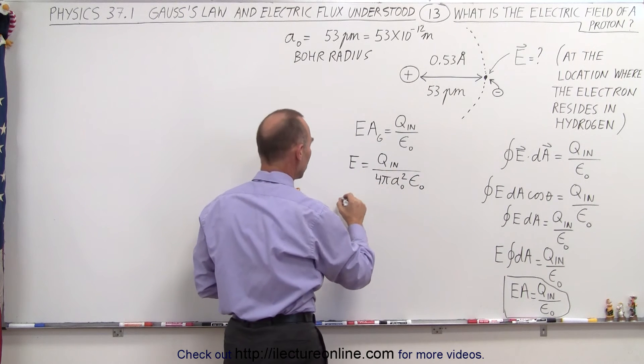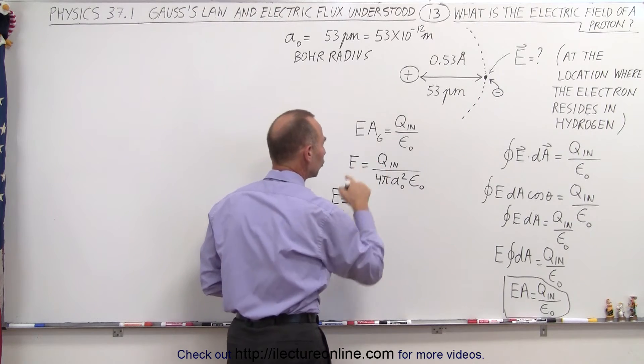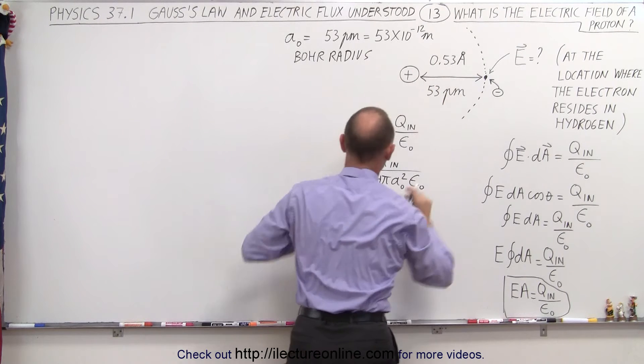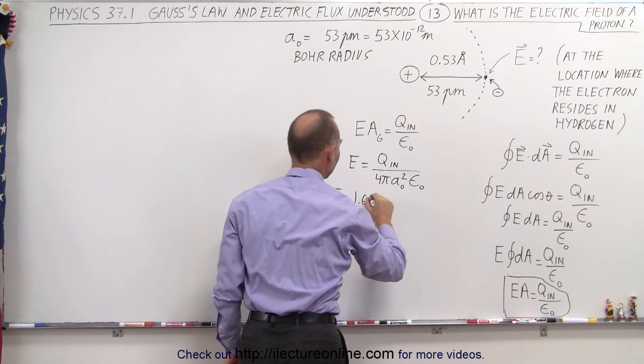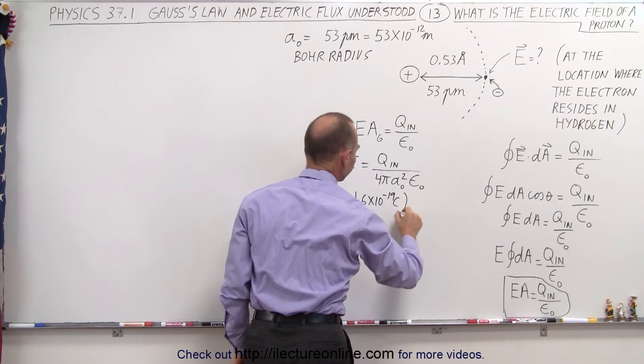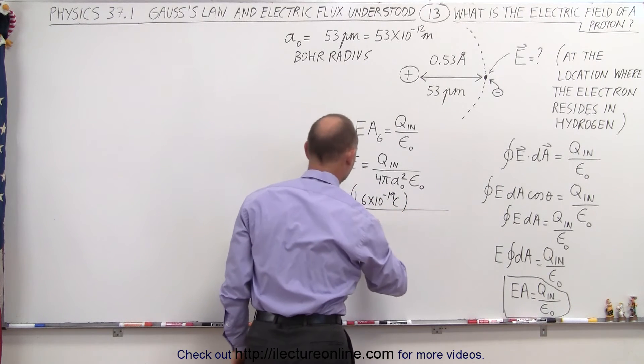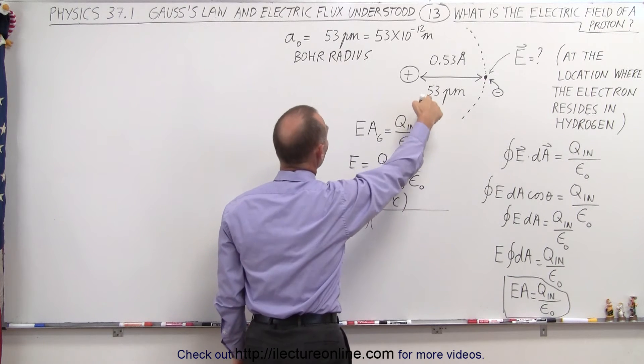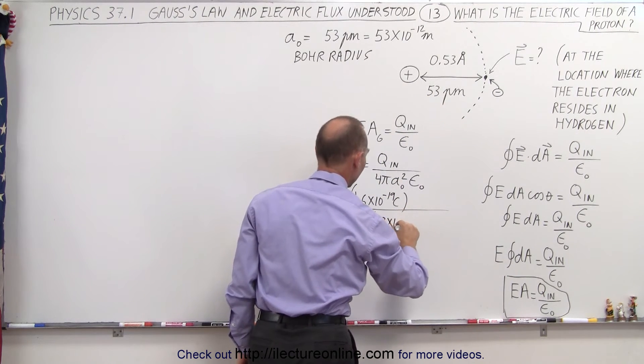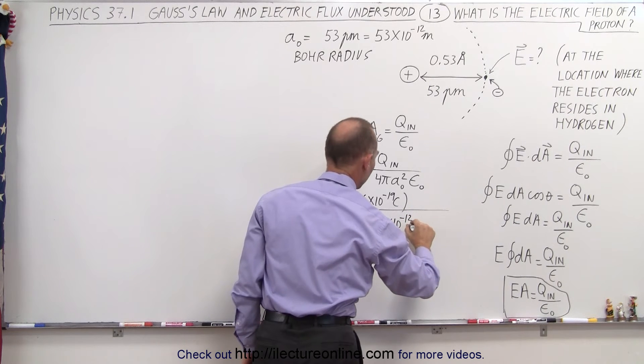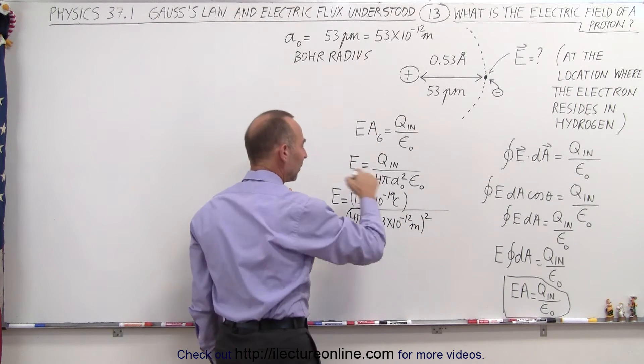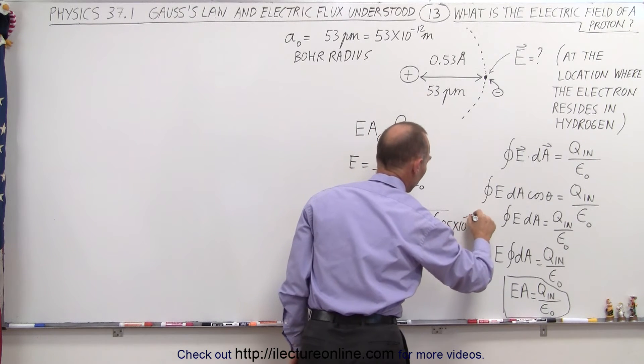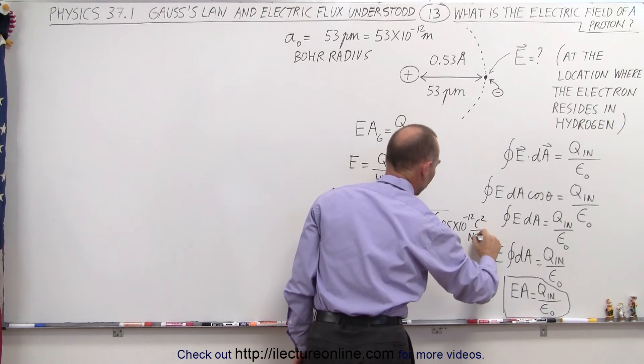Plugging everything in, the electric field is equal to the charge inside, which is the proton, 1.6 times 10 to the minus 19 coulombs, divided by 4 pi, and divided by the distance to the electron, 53 picometers, which is 53 times 10 to the minus 12 meters, and we square that, and then epsilon sub nought is 8.85 times 10 to the minus 12, coulombs squared per Newton meter squared.